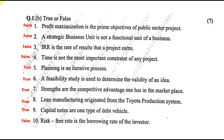Along with the MCQs, the last question was true or false. Profit maximization is a prime objective of public sector project — false. A strategic business unit is not a functional unit of a business — false. IRR is a rate of result that a project earns — false. Time is not the most important constraint of any project — false. Planning is an iterative process — true. A feasibility study is used to determine the validity of an idea — true. Strengths are competitive advantage one has in the marketplace — true. Lean manufacturing originated from the Toyota production system — true. Capital notes are one type of debt vehicle — true. And risk-free rate is the borrowing rate of the investor — false. These were the various objectives that appeared in the past three question papers.